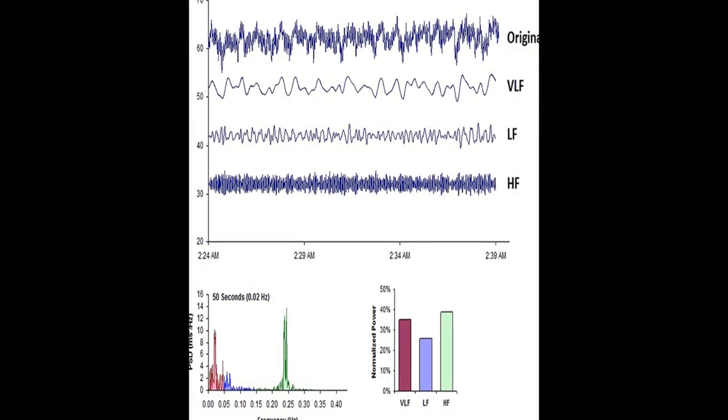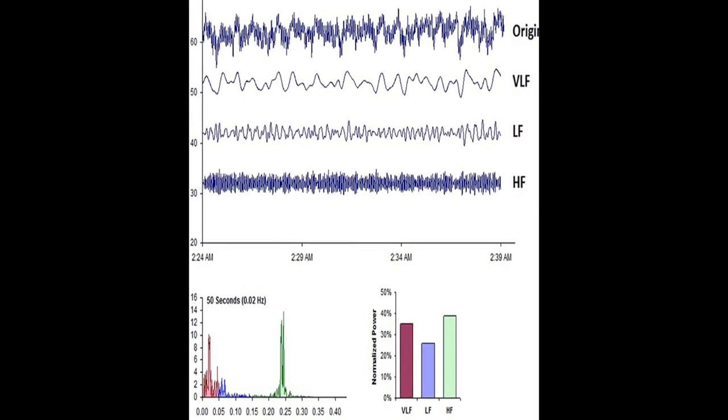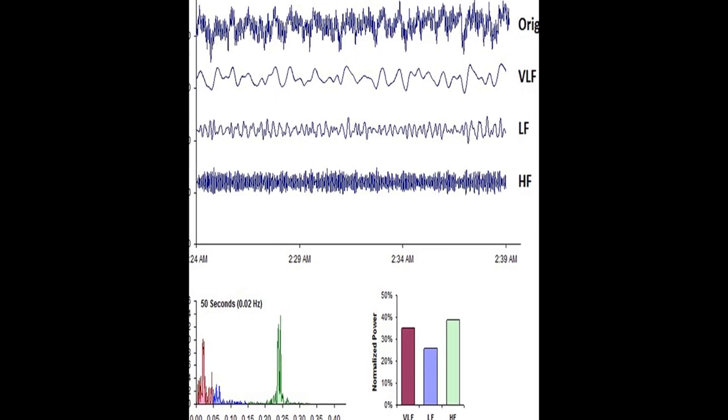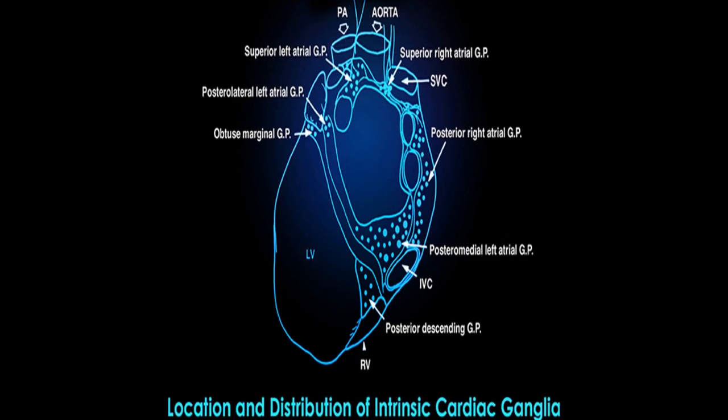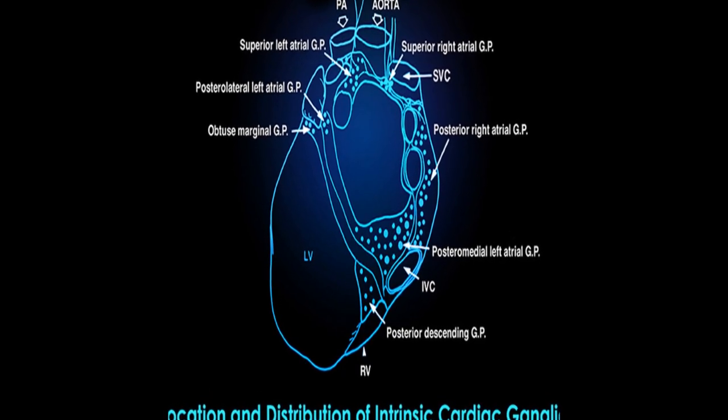Heart Rate Variability, HRV, is an emergent property of interdependent regulatory systems that operate on different time scales to adapt to challenges and achieve optimal performance.